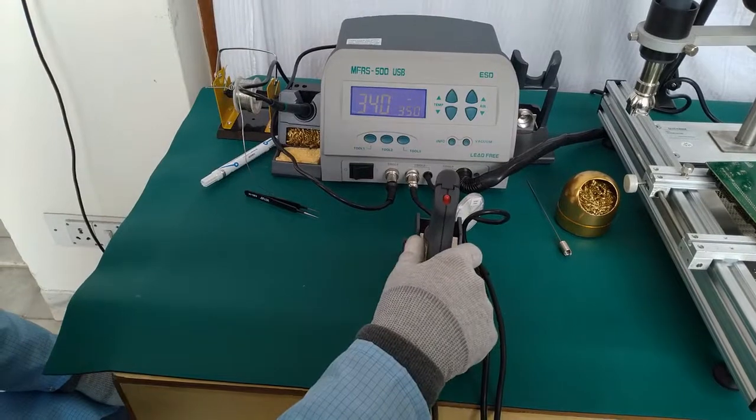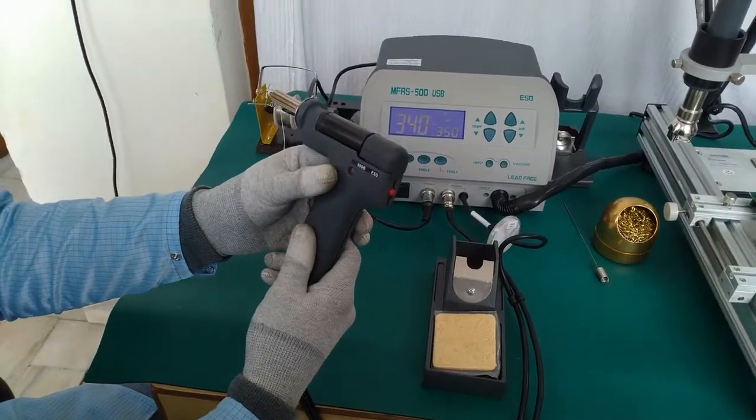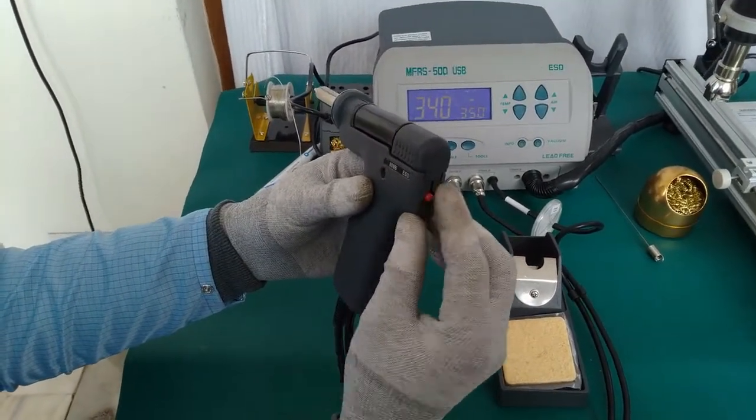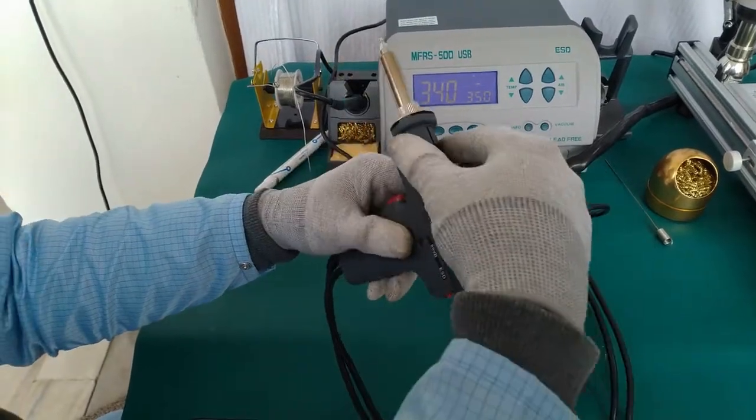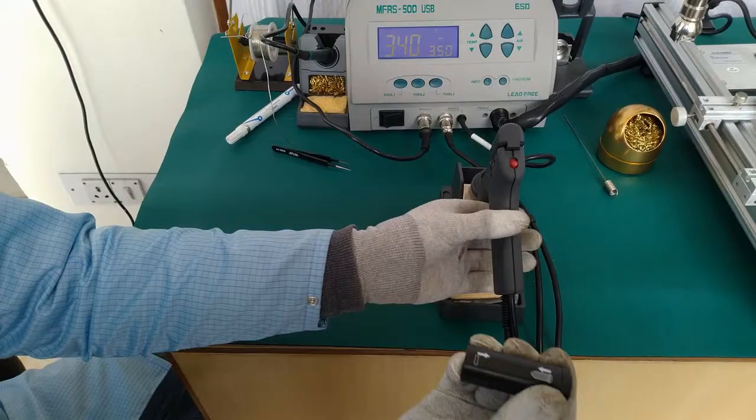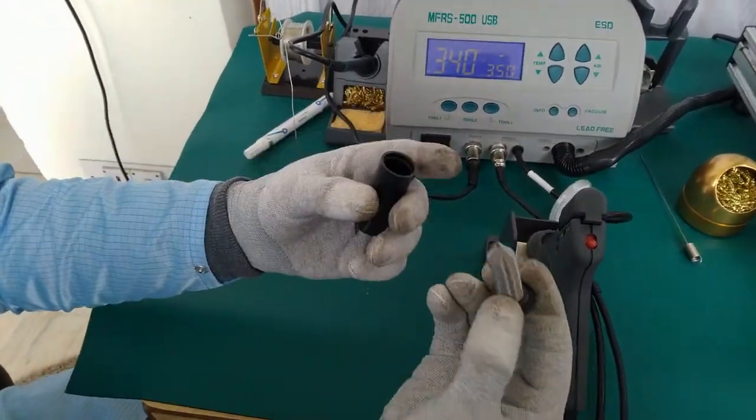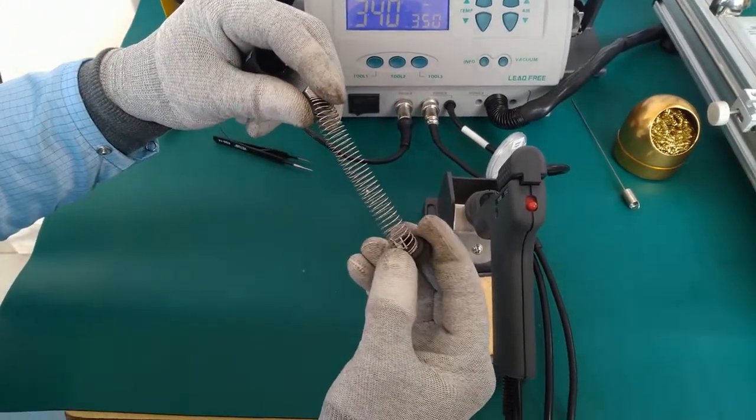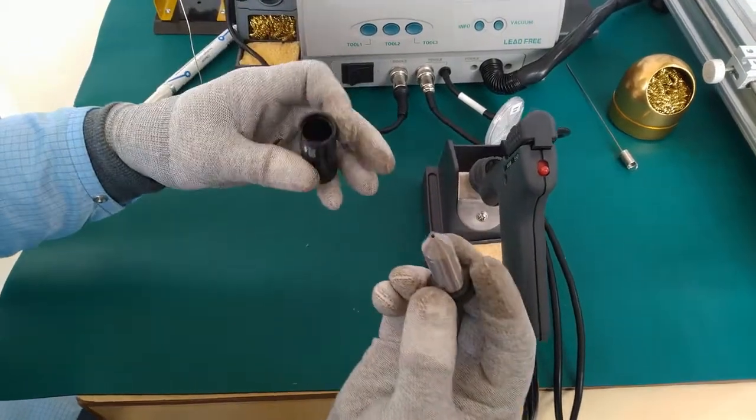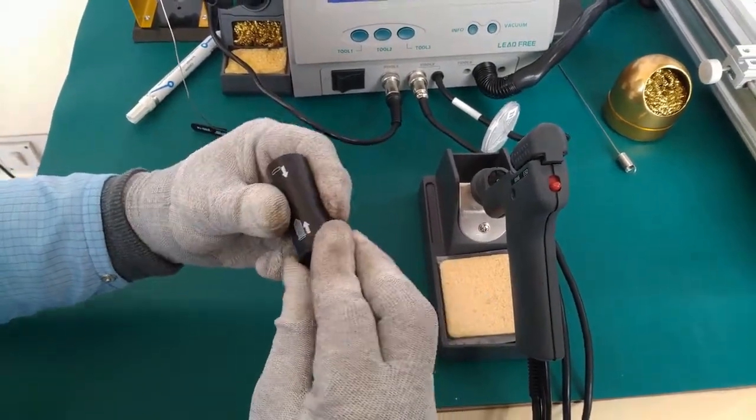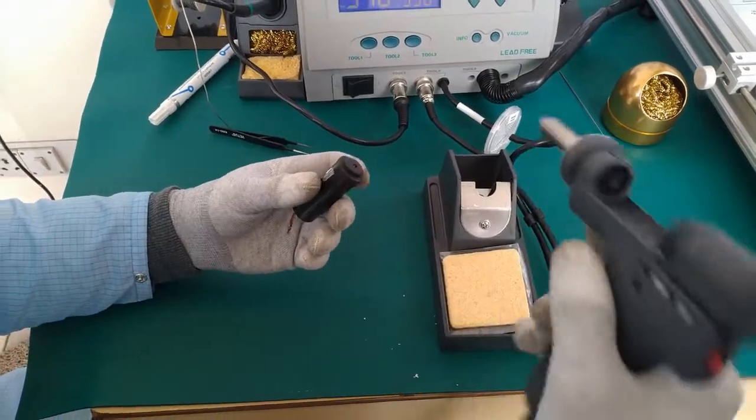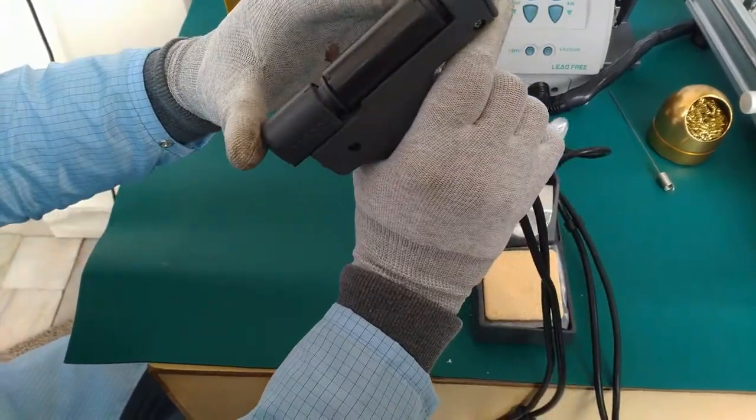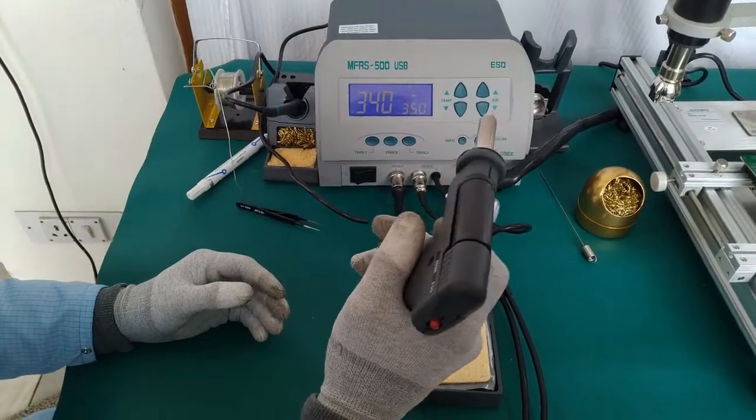Now we will move to the maintenance part of the desoldering iron. The solder is collected inside this solder collection tube. First we will pull this trigger down and take the solder collection tube out. We will show you where the solder is collected inside this spring. We need to clean the spring regularly. After cleaning, we will place it back and keep the solder collection tube on the desoldering iron, pull it back, and press this back portion to lock it again.